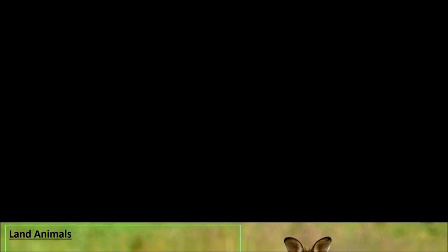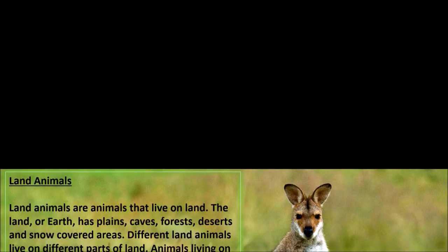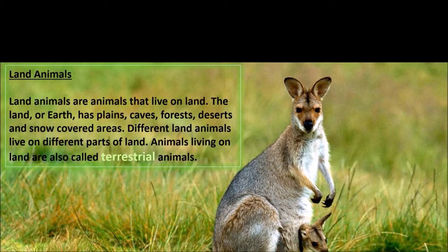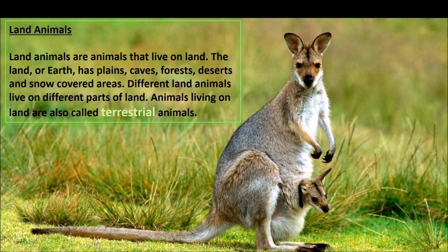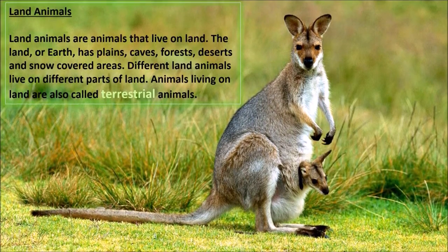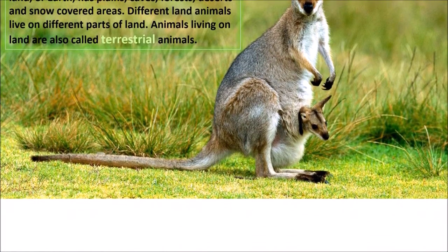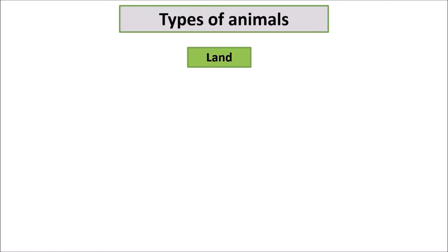Land animals are animals that live on land. The land has plains, caves, forests, deserts, and snow-covered areas. Different land animals live on different parts of land. Animals living on land are also called terrestrial animals. Let us discover, based on their habitat, how each one of them differ.